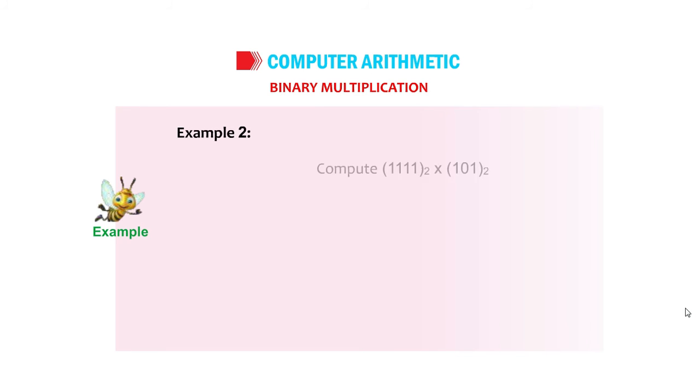Example 2: Compute (1111) base 2 into (101) base 2. 1111 into 101, 1111 into 0 is 0, 0, 0, 0, plus 1111 equals 1001011.